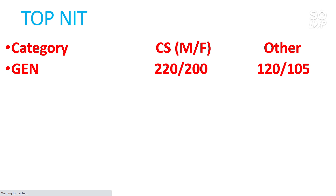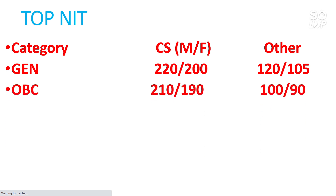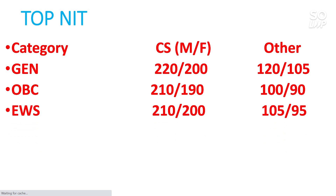For OBC category, CS branch at a top NIT requires around 210 marks for male and 194 for female. For other branches in top NIT under OBC, you need around 190 for both male and female. These marks may vary by 5 to 10 depending on the difficulty level of your shift, as there are many different shifts from 23rd to 26th of the February attempt. For EWS category, CS requires 210 for male and 200 for female, and for other branches 105 for male and 95 for female.